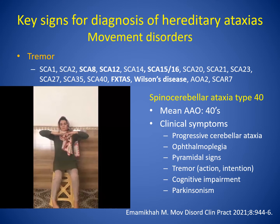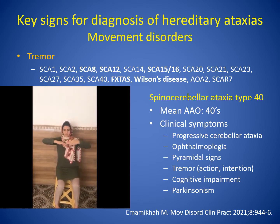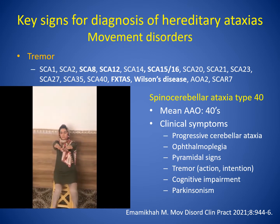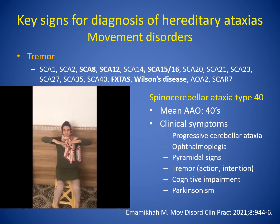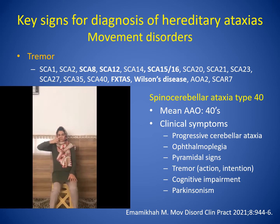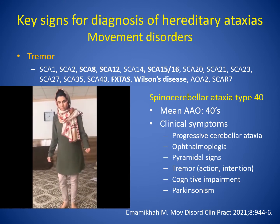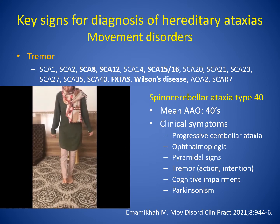SCA 40 is a very rare type and has been reported only in two families, with the clinical picture including progressive cerebellar ataxia, dysarthria, pyramidal signs, action tremor, dementia, and Parkinsonism. This SCA 40 patient shows postural tremor of her hands and side-to-side head tremor, as well as intention tremor in upper extremities, more severe on the right side. Finger-nose test and heel-knee test suggested mild dysmetria. Gait was mildly ataxic with mild difficulty performing tandem gait.